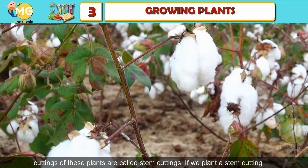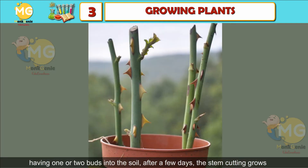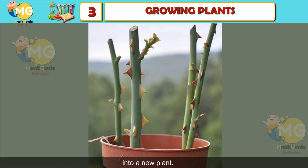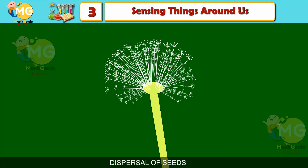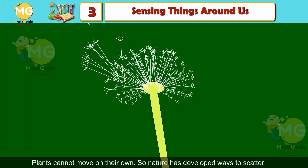Artificial vegetative reproduction: some plants like rose, hibiscus, bougainvillea, sugarcane, and cotton have buds on the stem. Small cuttings of these plants are called stem cuttings. If you plant a stem cutting having one or two buds into the soil, after a few days the stem cutting grows into a new plant.